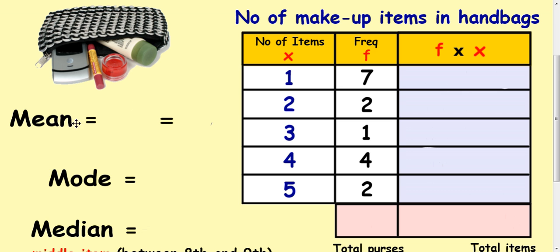So our first task here is how do you calculate the mean from this information? Well the way to do it is to basically work out how many items there were all together and divide that by the total of the frequencies.